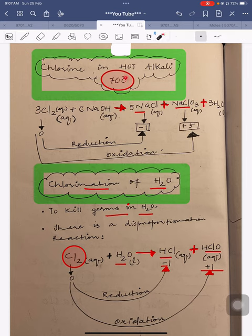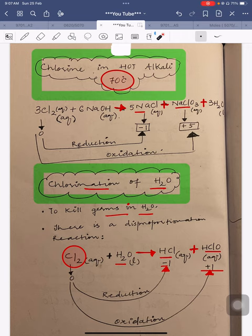When chlorine reacts with hot alkali (NaOH), the products are NaCl, NaClO₃, and water. You may be wondering whether to memorize this. This reaction is very important for the AS syllabus, so keeping it in mind will not only help in O-levels and IGCSE but also in AS-level.